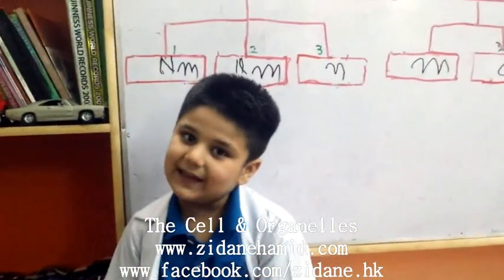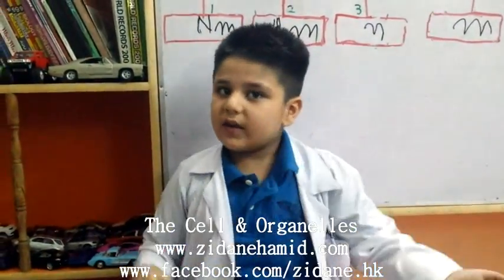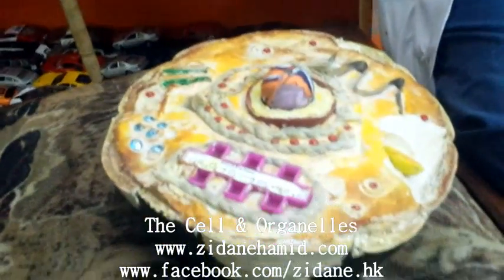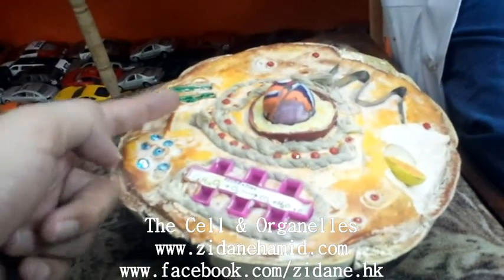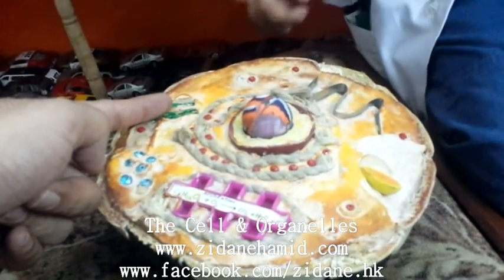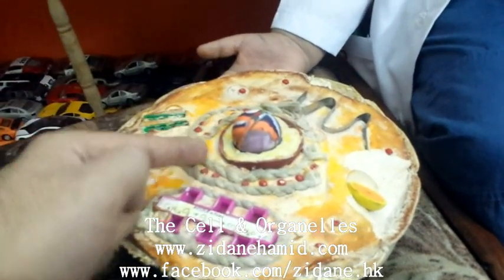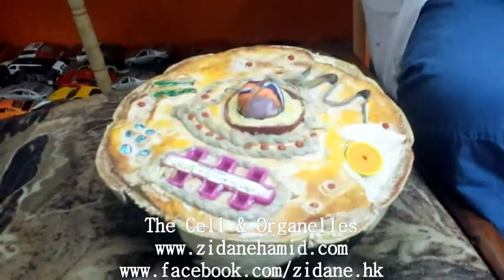More or less it looks like a city — isn't it? Yes, it looks like a city, it looks like a factory. So let me remind you of the organelles we have talked about: cell membrane, mitochondria, lysosome, centriole, ribosomes, endoplasmic reticulum, the nucleus in detail, and the Golgi bodies.